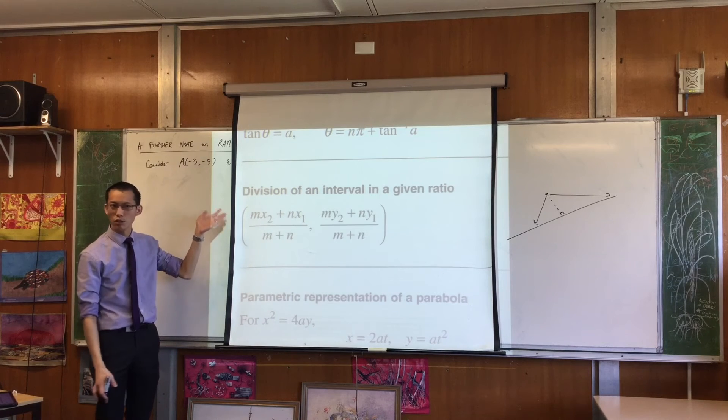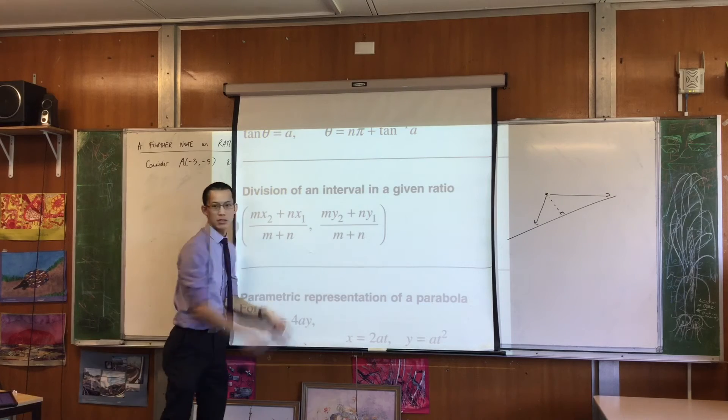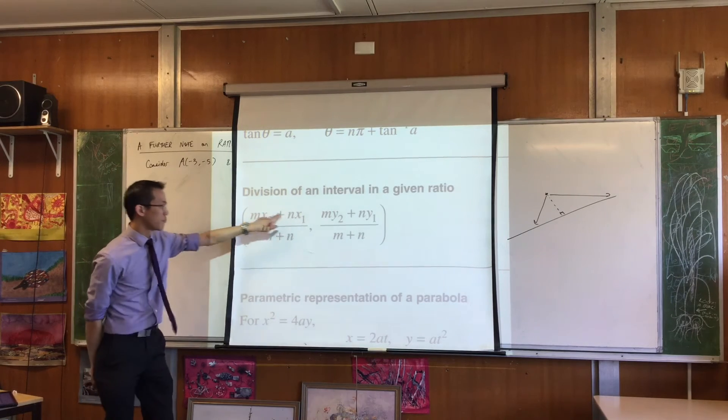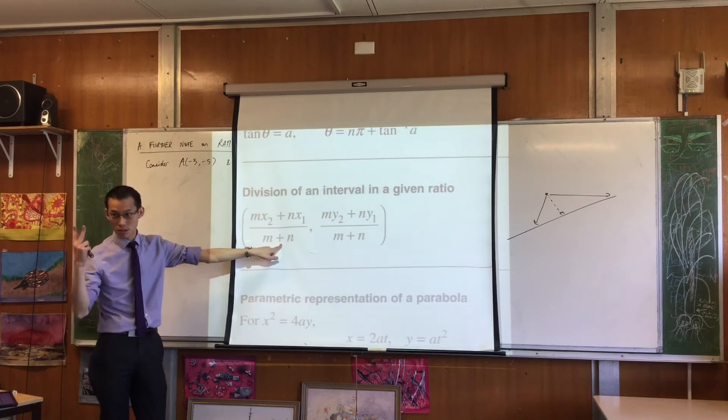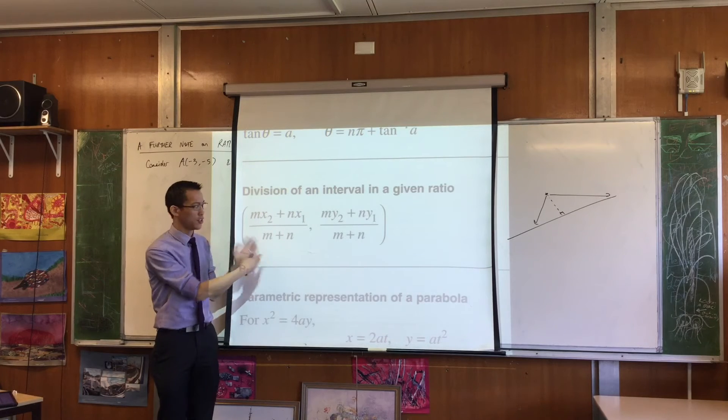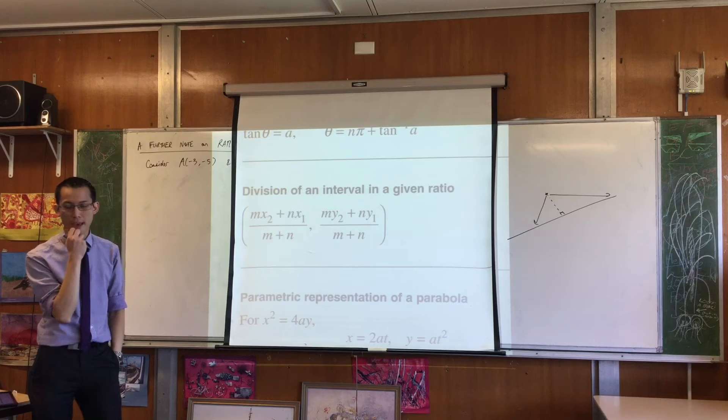You used congruent triangles to work with that. If the ratio is one to one, look at all the m's and n's. What happens if you change all of those into ones? You get x1 plus x2 over 2 and then you get y1 plus y2 over 2. That's the midpoint formula. So it is there, just like sin squared plus cos squared equals one, you can get to it from there if you like.